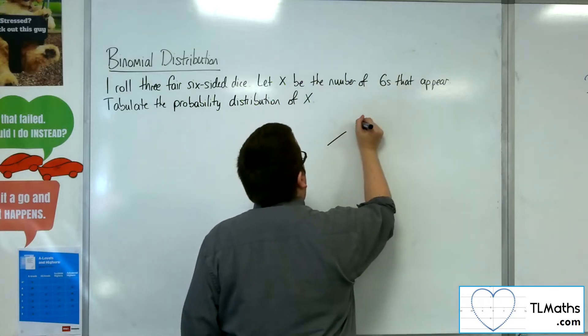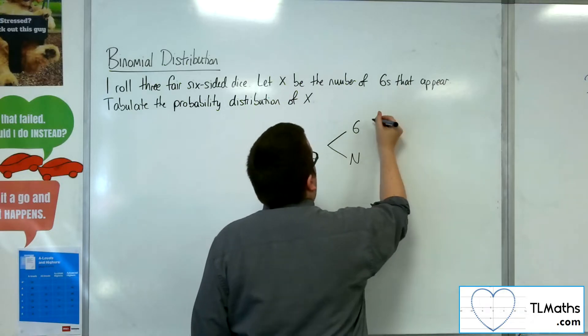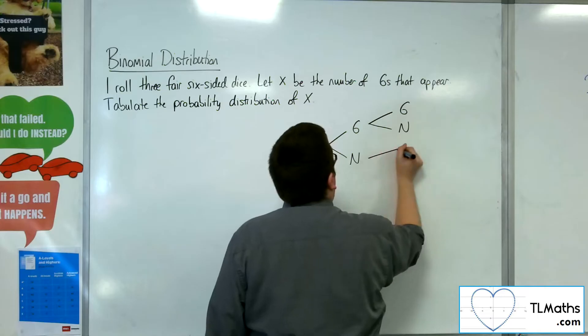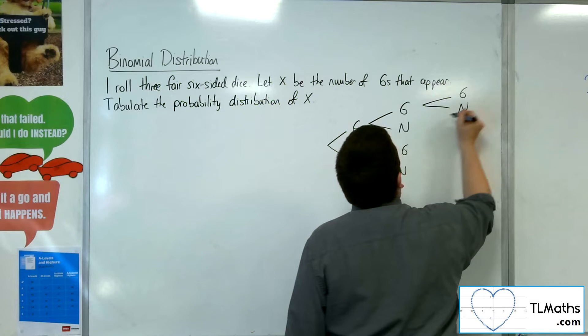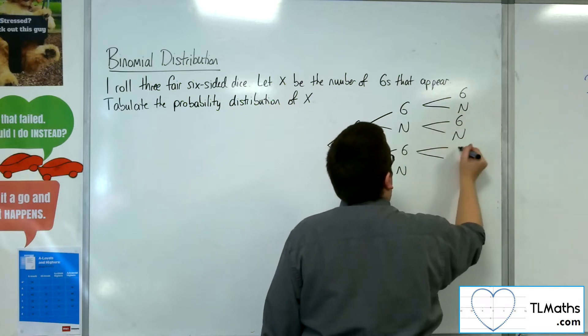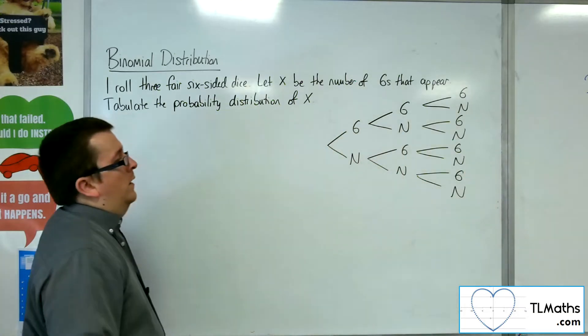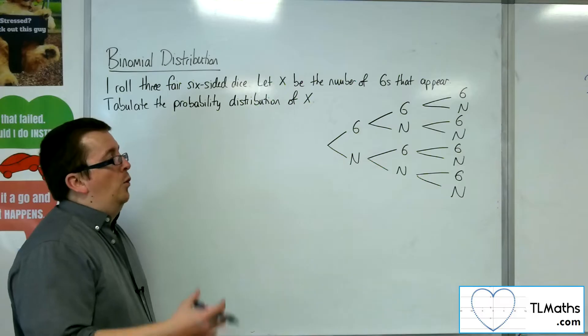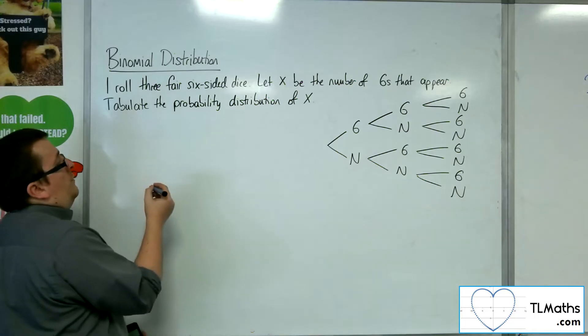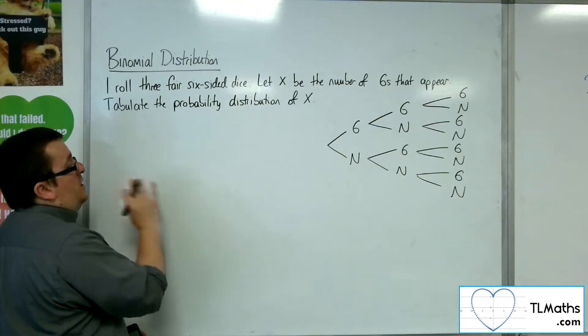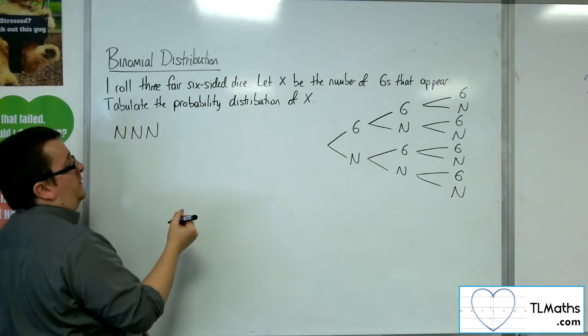So we would either roll a six or not a six. And in the second stage it would be six or not a six, six and not a six. And in the third stage, six or not a six, six and not a six, six and not a six, and six and not a six. So in order for there to be no sixes whatsoever, I would have had to have had no sixes, no sixes, no sixes.